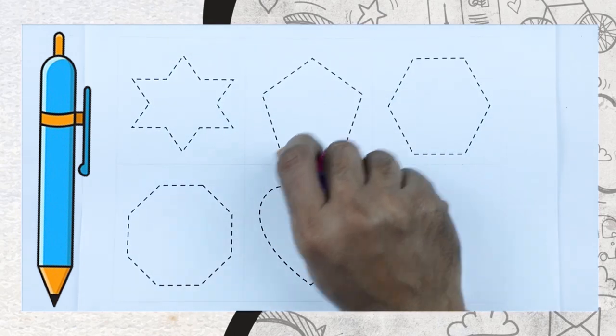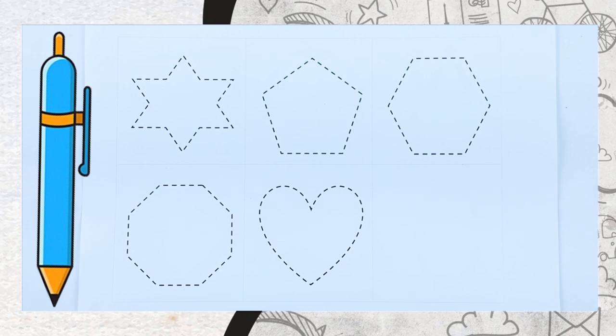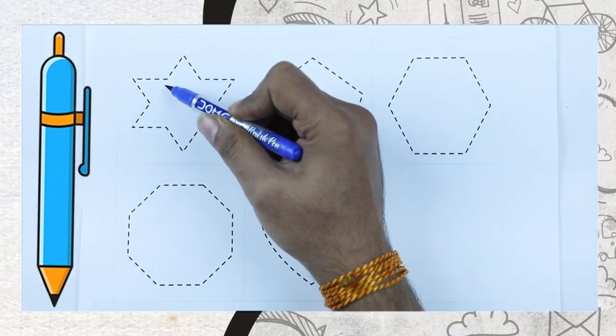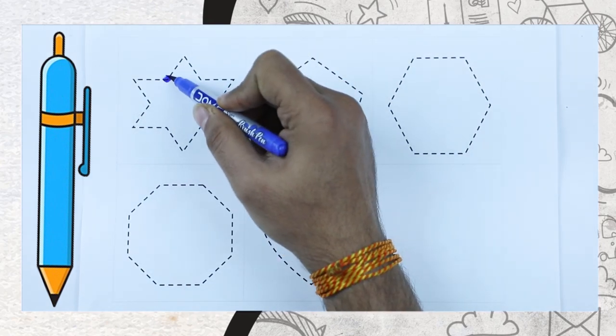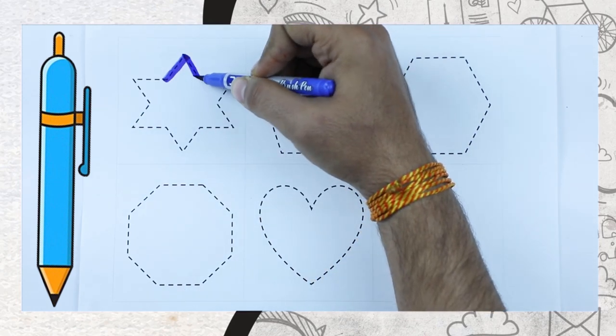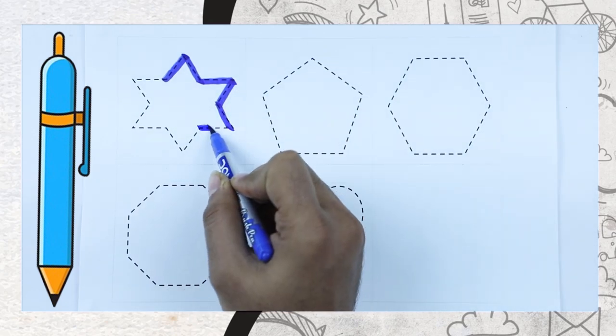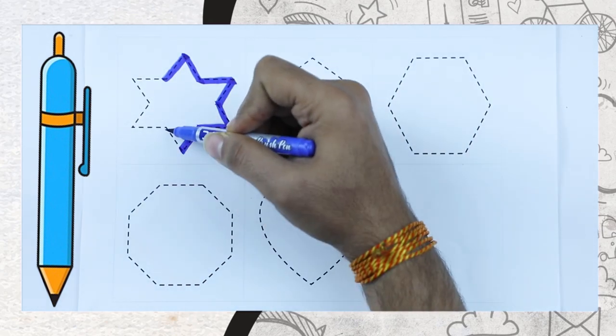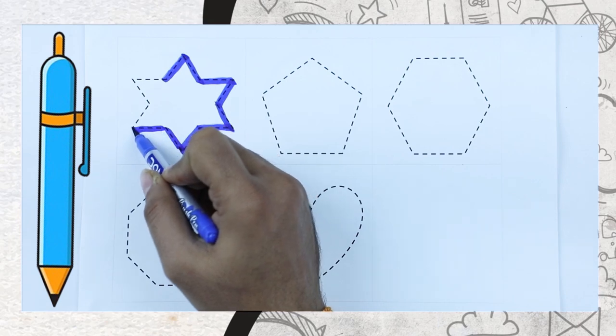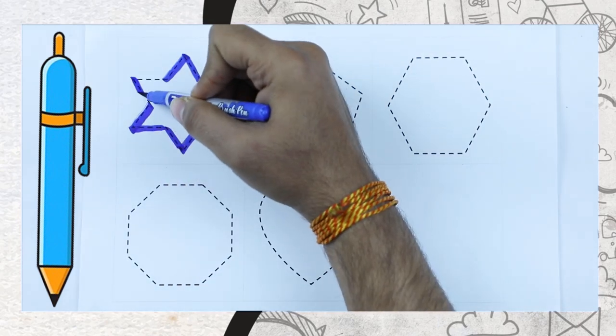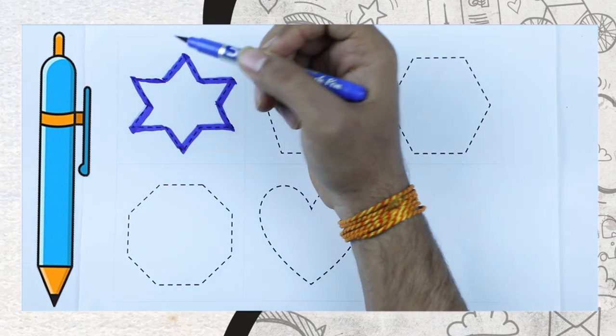Now we make shapes. It's blue color. It's a star. Now we make star with blue color. Yes, it's star.